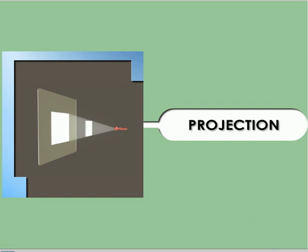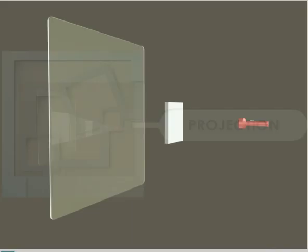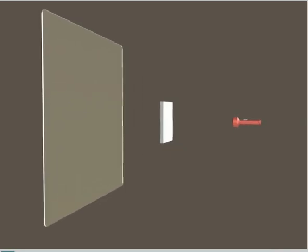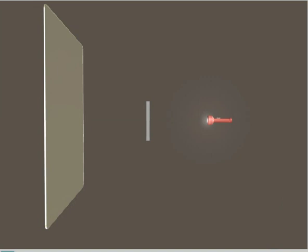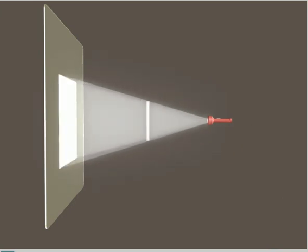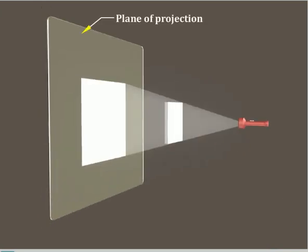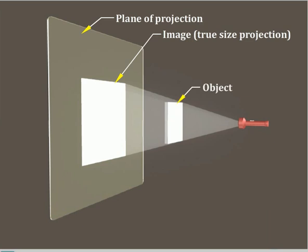Projection. In this video, we are going to discuss about the concept of projection of an object. Consider a plane of projection, an image, an object, and an observer. If rays of sight are drawn from the eye of the observer to the object and are allowed to fall on a plane of projection, the object is said to be projected. The rays of sight are also called projectors.